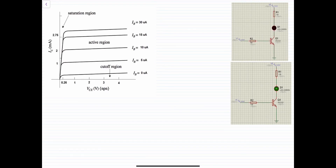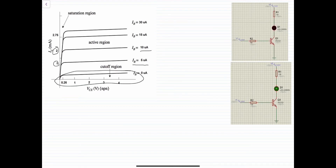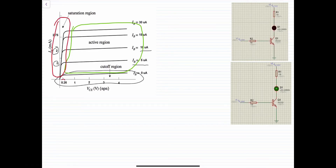This graph shows collector current IC versus VCE for several values of base current IB. For example, for IB equals 5 microamps, IC equals 1 milliamp, and for IB equals 10 microamps, IC equals 2 milliamps. The first region is the cutoff region where the transistor is off. The second is the active region where the output is amplified by a factor of beta. The third is the saturation region where IC is maximum (IC equals IC saturation) and VCE is minimum (VCE equals VCE saturation).